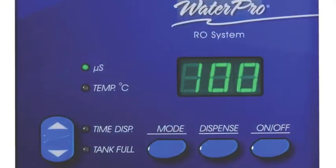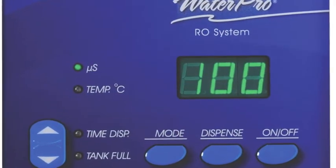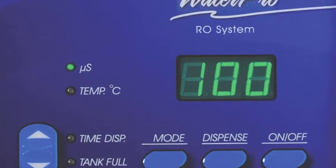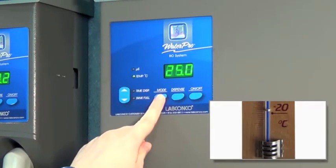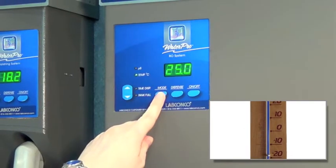When microsiemens is selected, the water's conductivity and the unit of measurement appear on the LED display. The temp selection displays the water temperature in degrees centigrade.